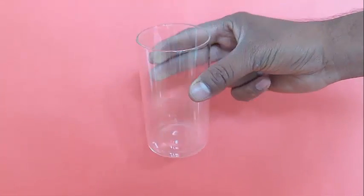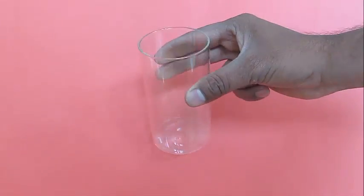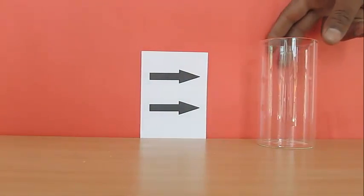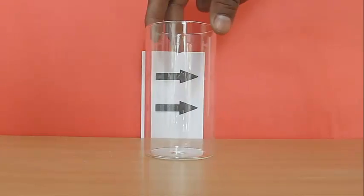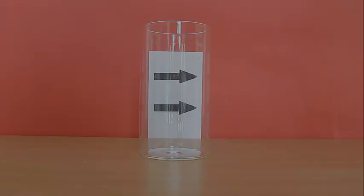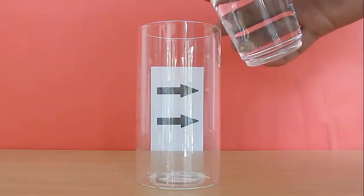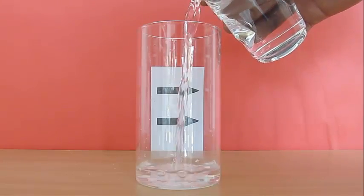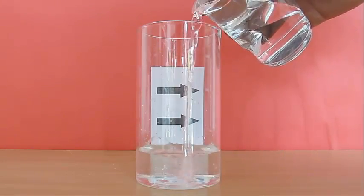Now take this transparent cylindrical glass, so that when you look from the top you see a circle. Pour some water, keep it in front of the arrows, and start pouring water inside.